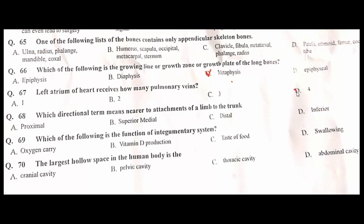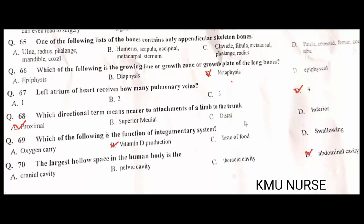Which directional term means near to the attachment of a limb to the trunk? Proximal. A is the correct option. Which of the following is a function of the integumentary system? Vitamin D production. B is the correct option. The largest body cavity in the human body is the abdominal cavity.